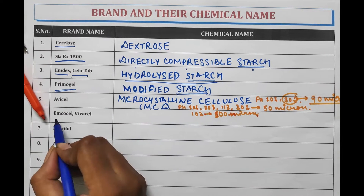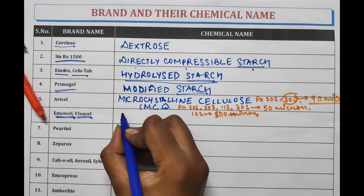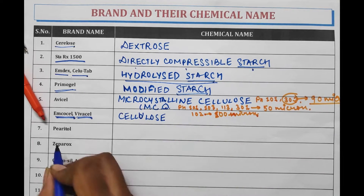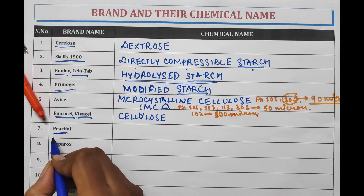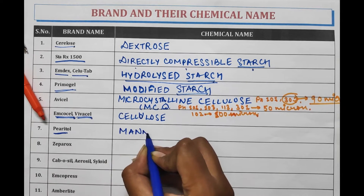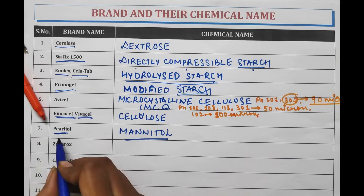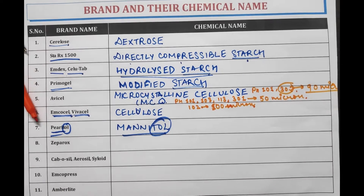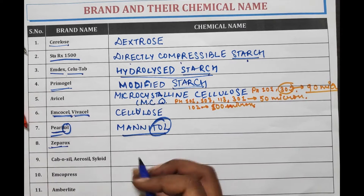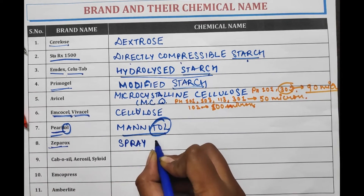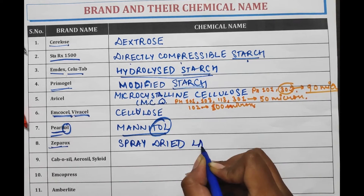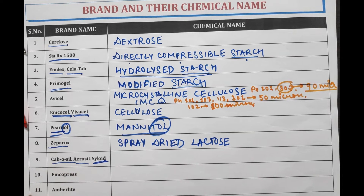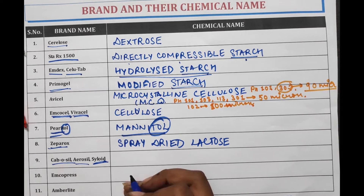Next, Amsocell and Vivacel are brand names of Cellulose. Perlitol is the brand name of Mannitol — Perlitol and Mannitol both end in 'tol', making them easy to remember. Ziparox is the brand name of Spray Dried Lactose. Cabosil, Aerosil, and Siloid are three brand names that share the common chemical name Colloidal Silica.